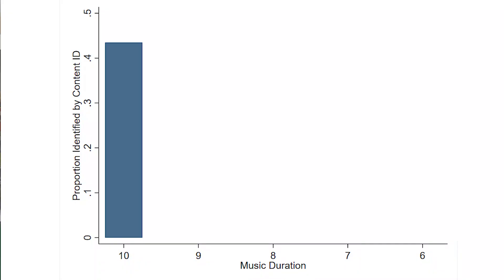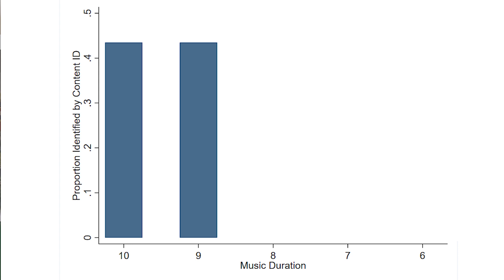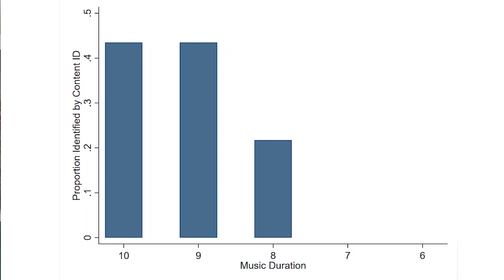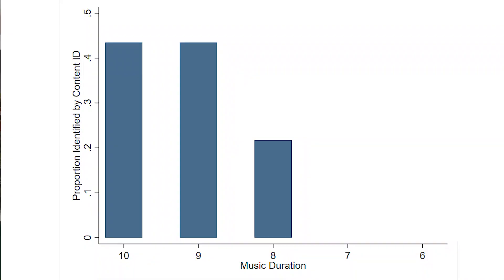So how did this work when we varied the length of the song? We started with 10 seconds and 43% of clips were identified as copyright violations. When we moved to 9 seconds, nothing changed. When we moved to 8 seconds, half of the songs dropped off — only about 21% were identified as copyright violations. Then at 7 seconds, only one song was seen as a copyright violation. And at 6 seconds, not a single song was identified, which might lead us to conclude that YouTube is actually allowing 6 seconds of copyrighted content without flagging it as a conflict.